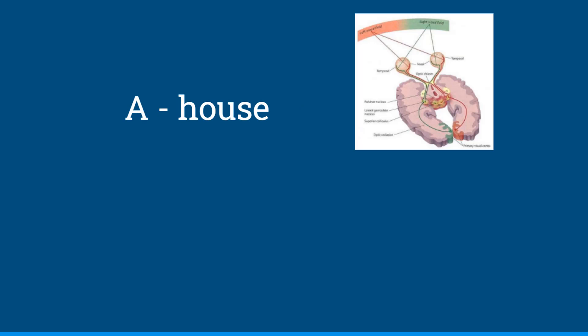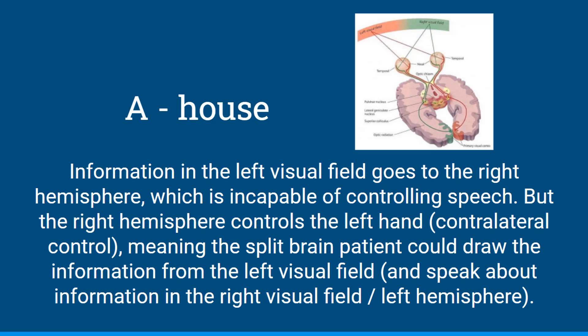The answer is A — he would draw a house with his left hand. Information in the left visual field, where the word 'house' was, goes to the right hemisphere. The right hemisphere is incapable of controlling speech, so he wouldn't be able to say he saw 'house,' but the right hemisphere controls the left hand due to contralateral control, so he could draw it. Information on the right side of the screen went to his left hemisphere, so he would be able to say he saw the word 'boat,' but not 'house,' even though he could draw it.